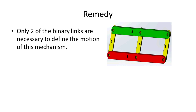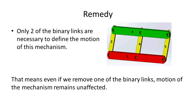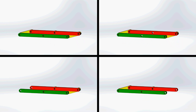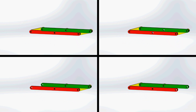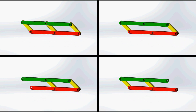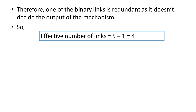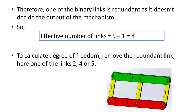Remedy: Only two of the binary links are necessary to define the motion of this mechanism. That means even if we remove one of the binary links, the motion of the mechanism remains unaffected. Therefore, one of the binary links is redundant, as it does not decide the output of the mechanism. The effective number of links equals 5 minus 1, which equals 4. To calculate the degree of freedom, remove the redundant link — here one of links 2, 4, or 5. Let's remove link 5.